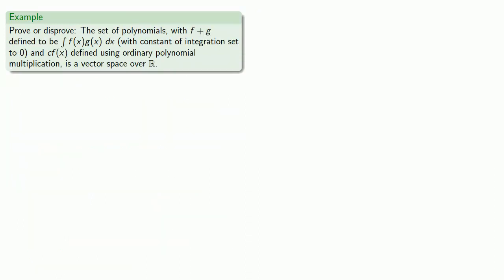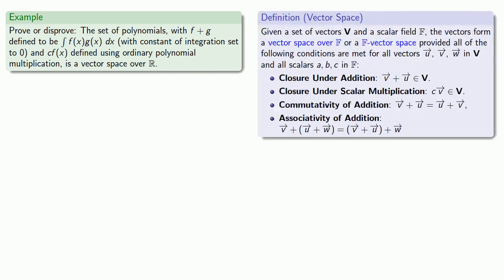Let's try a different example — this one requires a little calculus. Prove or disprove that the set of polynomials with f ⊕ g defined to be the antiderivative of the product fg (with constant of integration set to 0), and c·f(x) defined using ordinary polynomial multiplication, is a vector space over ℝ. Here, the ⊕ symbol does not mean ordinary polynomial addition, but instead the antiderivative of the product with the constant of integration equal to 0.